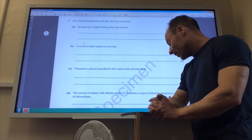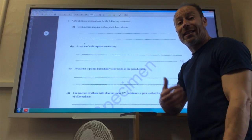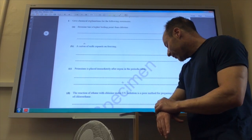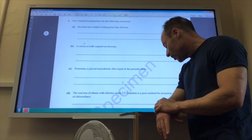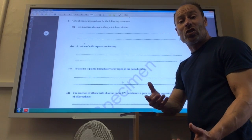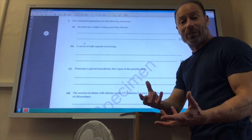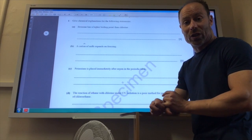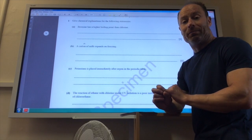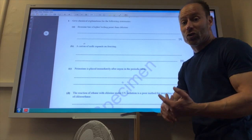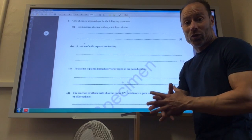Potassium is placed immediately after argon in the periodic table. Nice and easy. Potassium has one more proton than argon, that's why. The reaction of ethene with chlorine under UV radiation is a poor method for preparing a high yield of chloroethane. This is because in free radical substitution reactions, you can get multiple products, multiple substitution occurring. You could have dichloroethane, trichloroethane. It's very difficult to control.